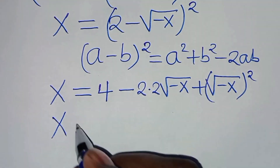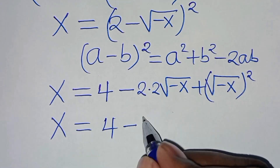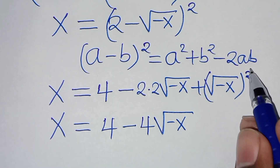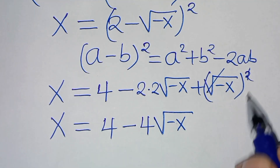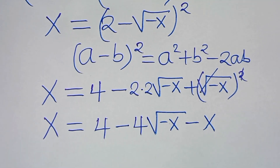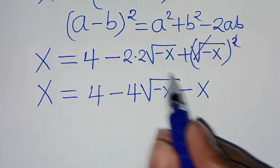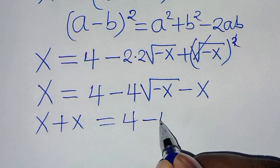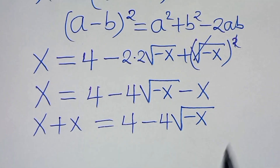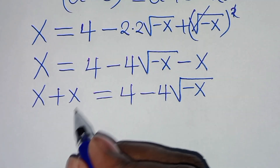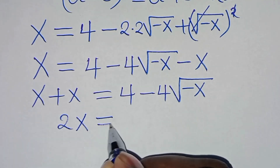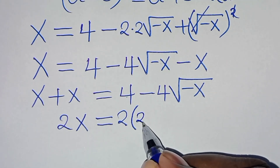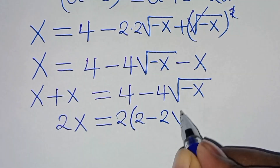The next step is that we have x equals 4, subtract 2 times 2, which is 4 times square root of minus x. Then we have square root of minus x squared, which eliminates the square root sign to give plus times minus x. So let's take minus x to the left hand side. So here we have x plus x, which is equal to 4 minus 4 times square root of minus x. So x plus x is 2x, and 4 minus 4 — we can factor out 2, so this is 2 times 2 minus 2 times square root of minus x.